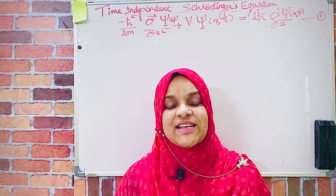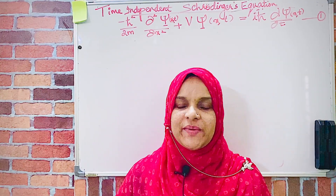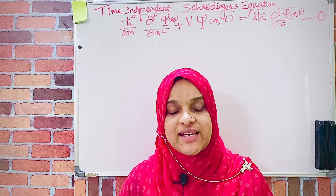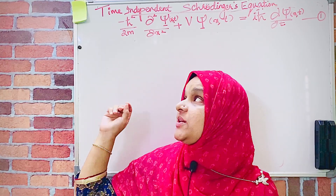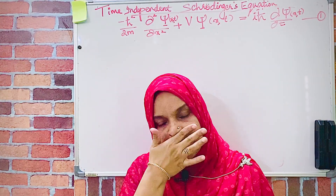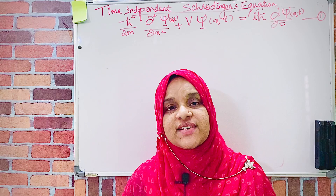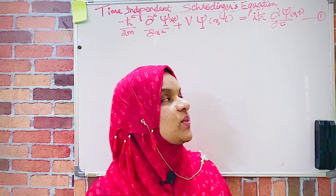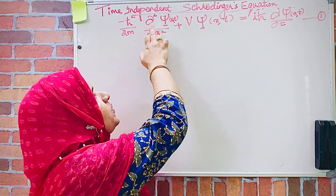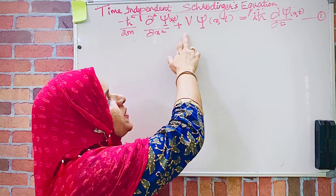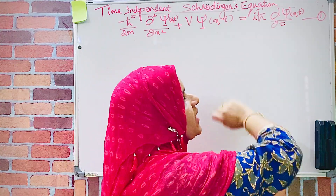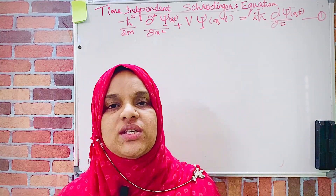Dear students, welcome to my next class on quantum mechanics. Today, we are going to derive Schrödinger's time-independent equation from the time-dependent form. We have Schrödinger's time-dependent equation as minus ℏ² by 2m times ∂²ψ/∂x² plus Vψ equal to iℏ ∂ψ/∂t.